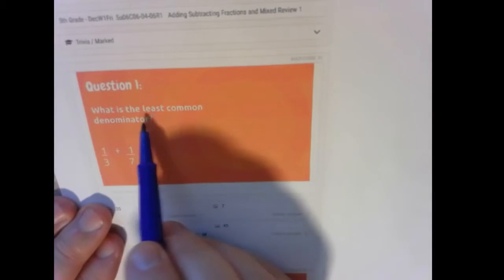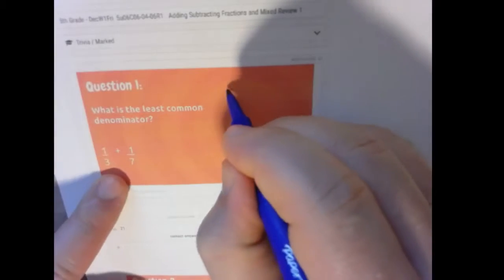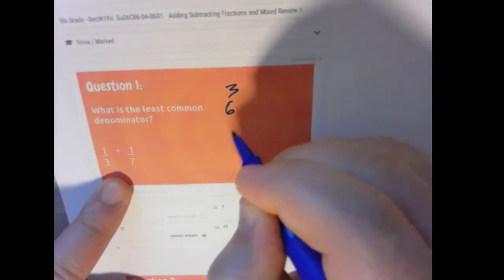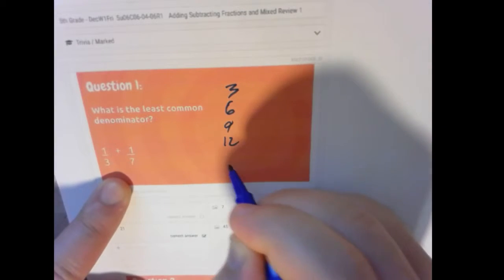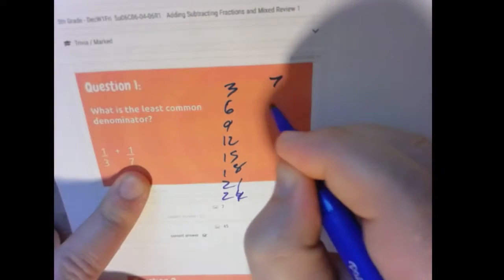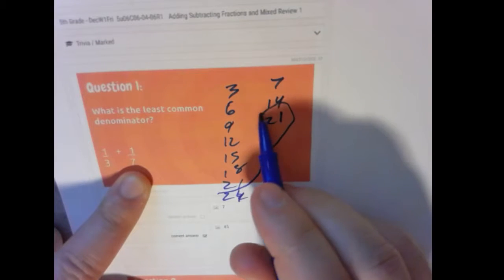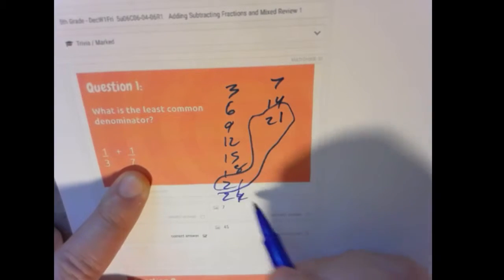So this one is asking us, what is the least common denominator? If you remember how we did that, we looked at the multiples of 3: 3, 6, 9, 12, 15, 18, 21. We can keep going, 24. Now what about the multiples of 7? 7, 14, 21. Ah, there we go. So the least common denominator is going to be 21.